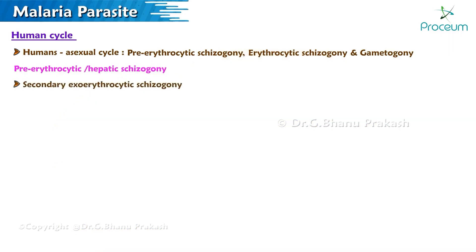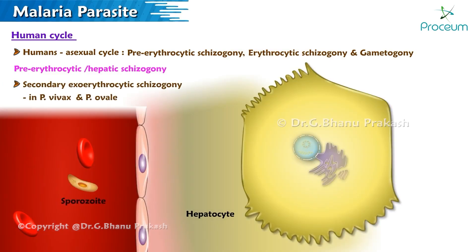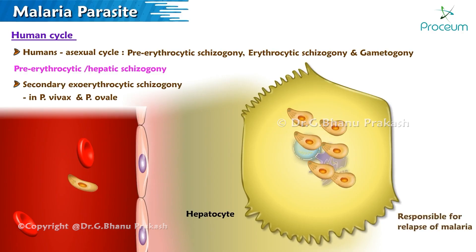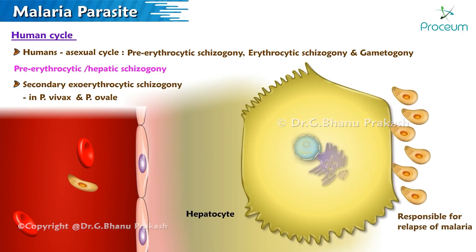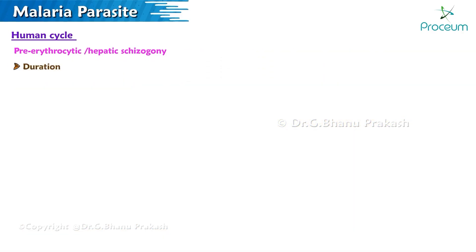Secondary exoerythrocytic schizogony occurs in Plasmodium vivax and Plasmodium ovale, in which a few sporozoites in latent forms, known as hypnozoites, reactivate. They undergo secondary exoerythrocytic schizogony, which is responsible for the relapse of malaria.